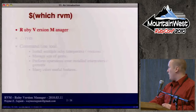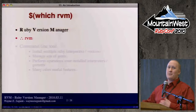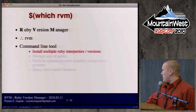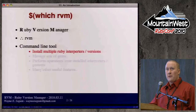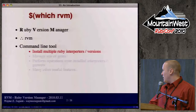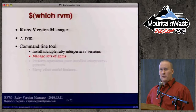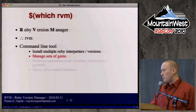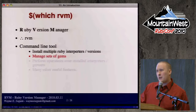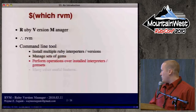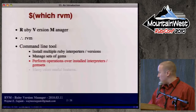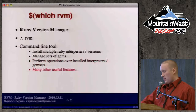RVM is a command-line tool that allows you to type 'rvm' at the command line with various options to do all kinds of things with Ruby interpreters. It allows you to install multiple Ruby interpreters, versions, patch levels, and revisions. It allows you to manage sets of gems for each of these installations — managing at the system/environment level, not within your application. That's better served by things like Bundler, which I recommend for managing gems inside your applications. It also supports virtual environments and performing operations over installed interpreters and gem sets.